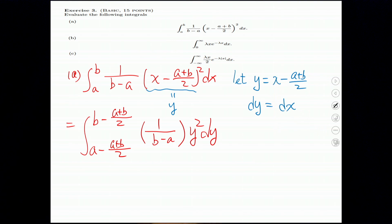So next, we just simplify this. The upper limit should be B minus A divided by 2. And the lower limit should be A minus B divided by 2. And here is B minus A in the denominator and times Y squared DY.